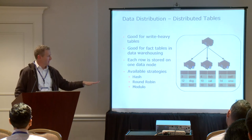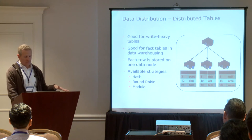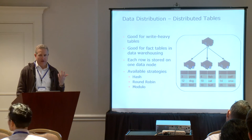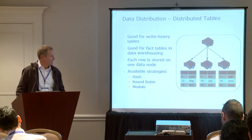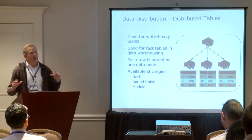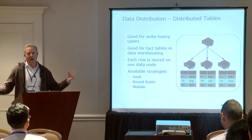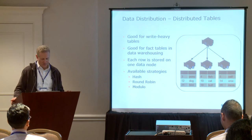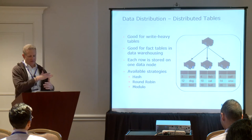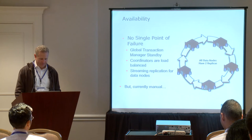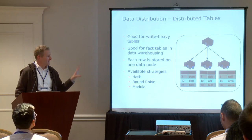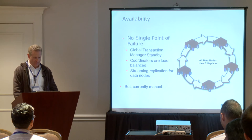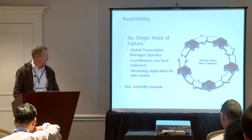In terms of how to distribute the data, you can choose how you want to do it. Hash makes sense because we can map it to a particular node. There are also a couple of other methods, like round robin — say you have a table with a single column, maybe it's log data, it doesn't make sense to calculate a hash on it, so it will just try to evenly spread out the data. The planner tries to take advantage of all this information to come up with an intelligent plan to execute as efficiently as possible.